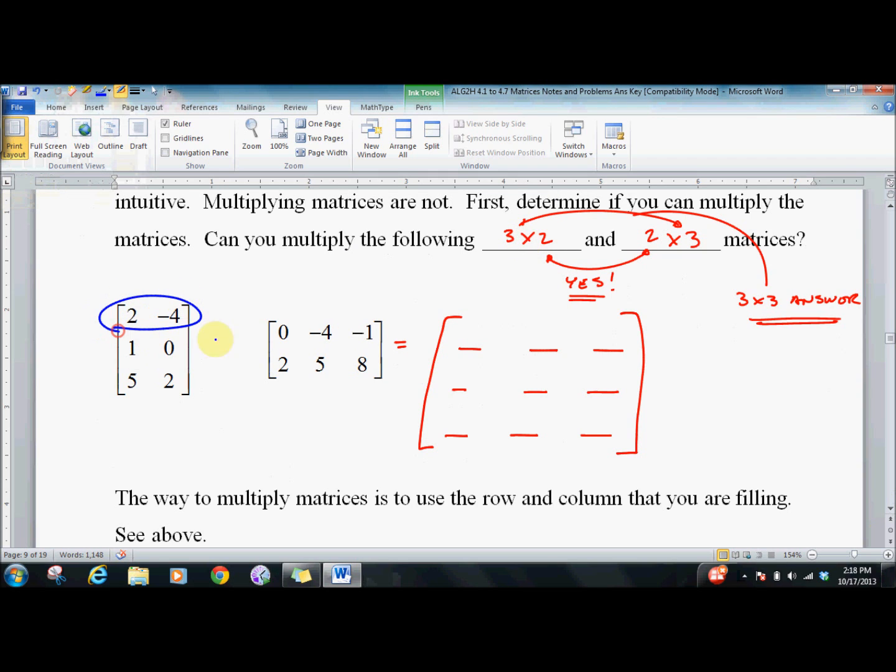Always row first and column second, always. The first row first column, this is your one-one position, is two times zero plus negative four times two. That's two times zero plus negative four times two, and of course we get negative eight. For row one column two, we do row one column two. We get two times negative four.